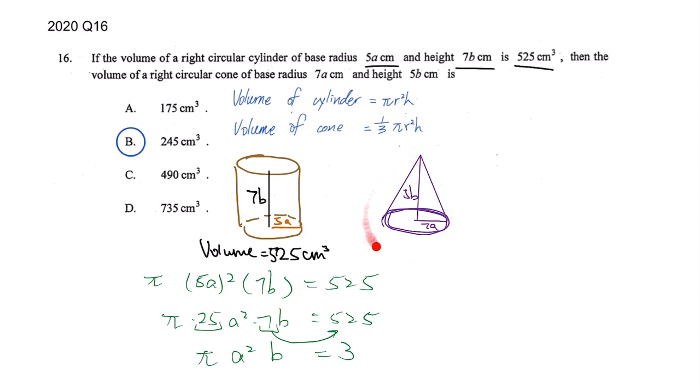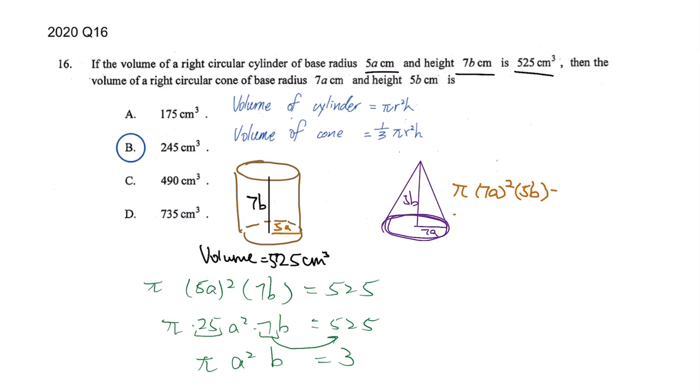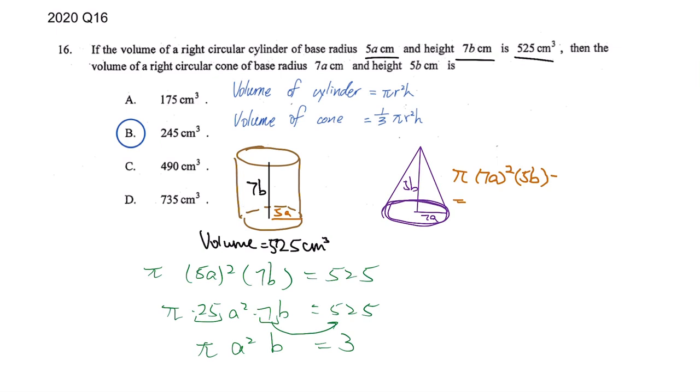And then let's see how to find the volume of this cone. That will be πr² and then times height. We don't know how much so just write the numbers: 7 squared times 5 will be 245, and then you have πa²b.